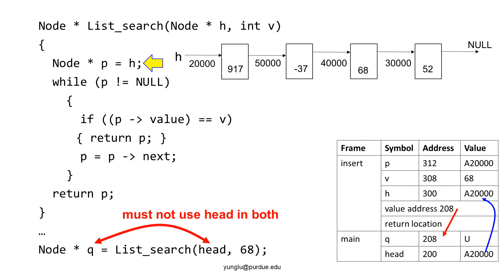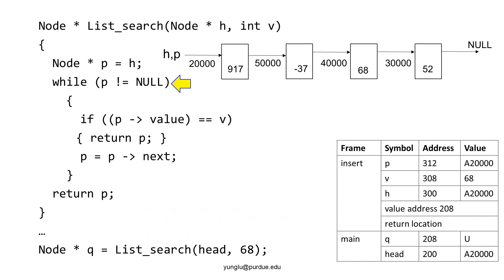At the beginning of the search function, the argument h stores the address of the first node, 20,000. The function creates a local pointer called p, and its value is the same as h, meaning p points to the same place as h. The function checks whether p points to valid memory — almost every function related to linked lists tests whether a pointer stores null or not. This is why you must ensure that pointers are correctly initialized. Inside the while loop, the function compares the node's value with the input argument v. If they are the same, the function returns p. If the values are different, the function continues to the next line.